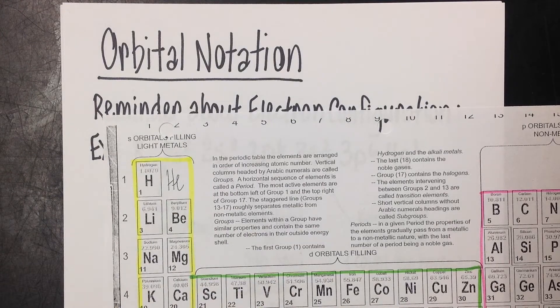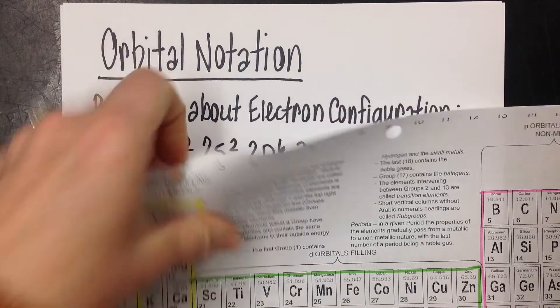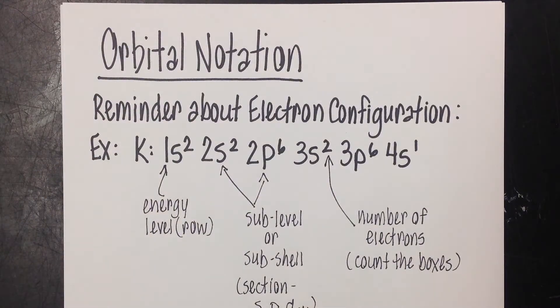So we're going to learn today how to do orbital notation. And orbital notation just really takes electron configuration a step further for putting those electrons into the orbitals.